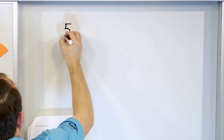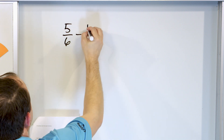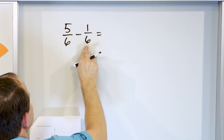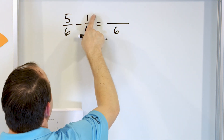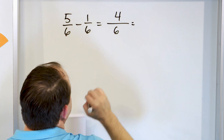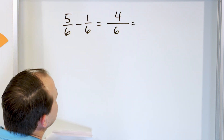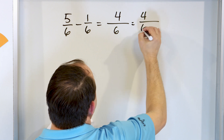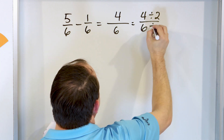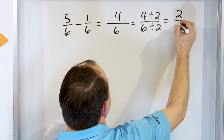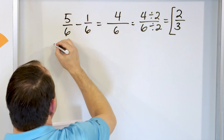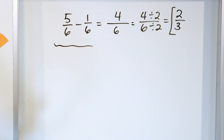We only have two more problems. Let's take a look at five-sixths, and we're going to subtract one-sixth. We have a six, and five minus one means a four goes into the final answer. I can simplify that by dividing by two — four divided by two is two, and six divided by two is three. And so the answer is two-thirds.